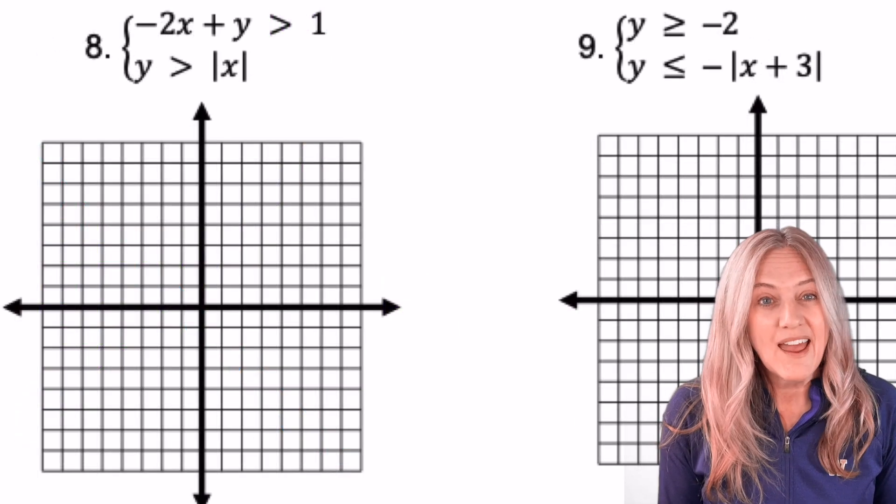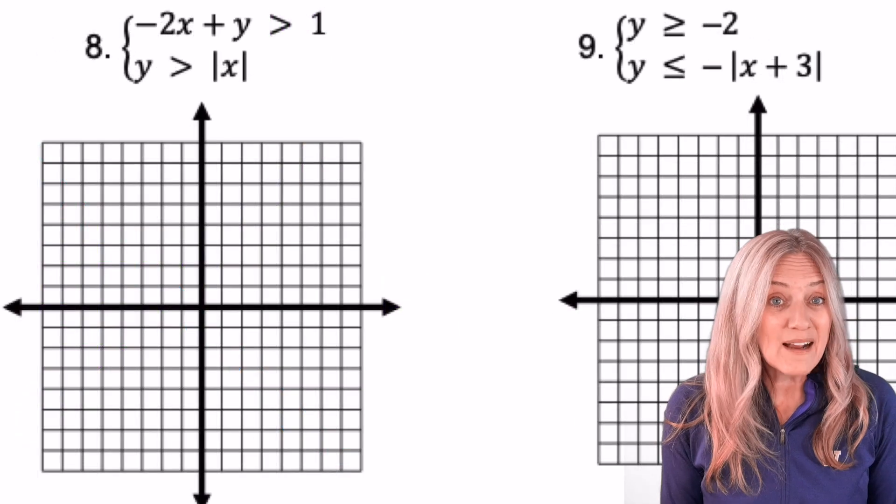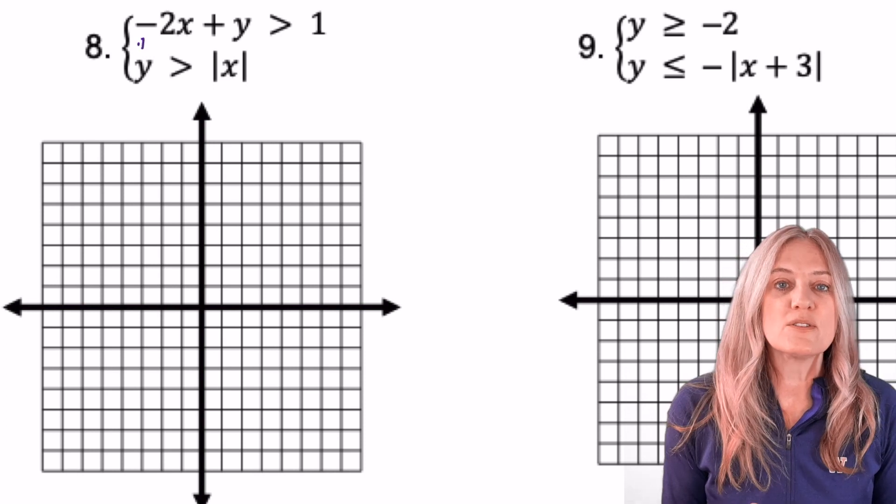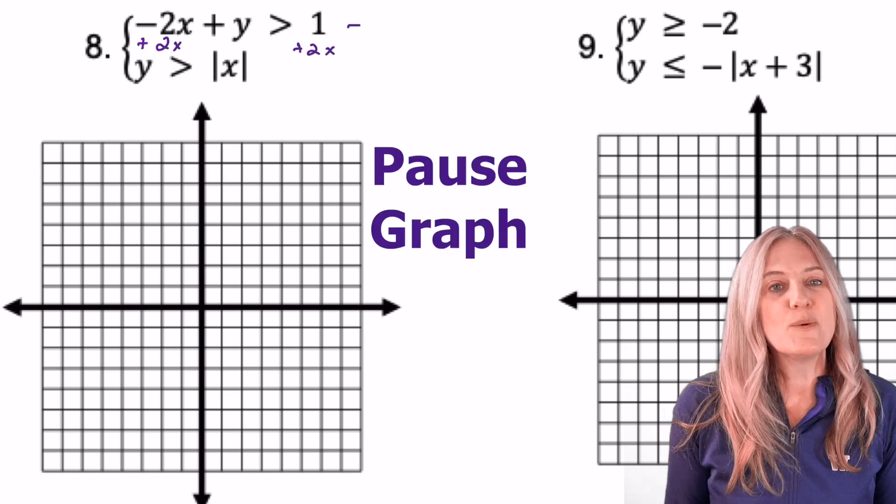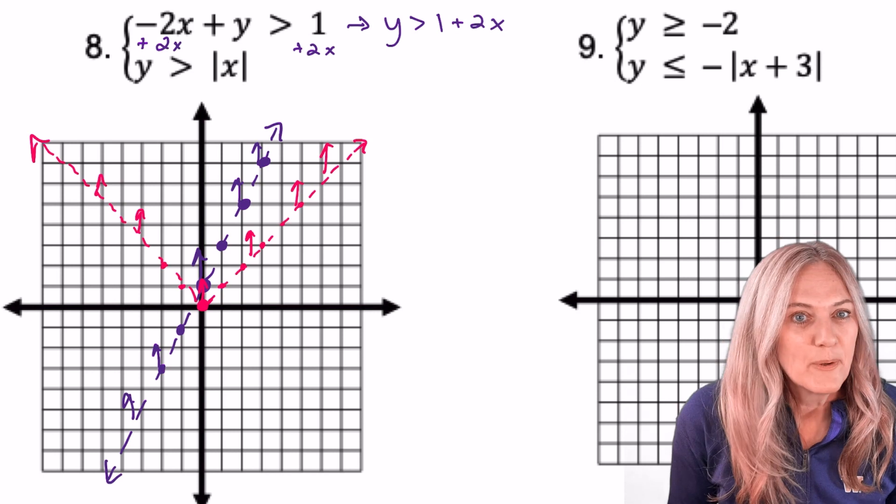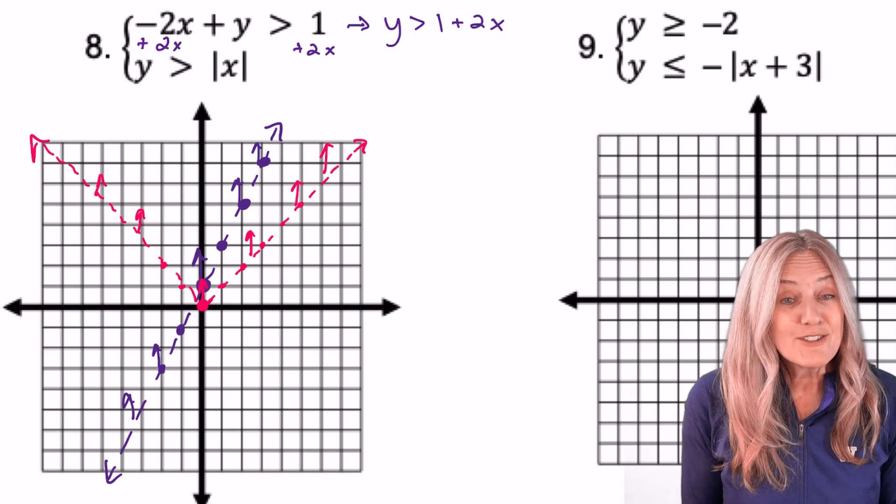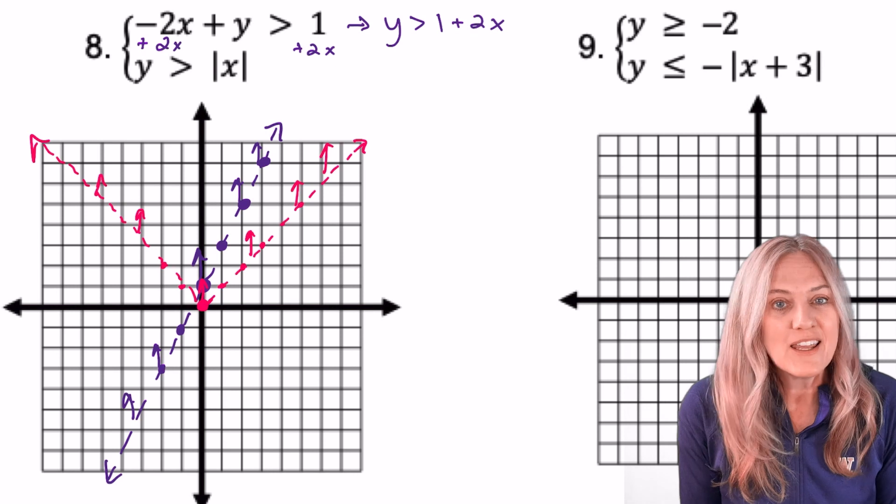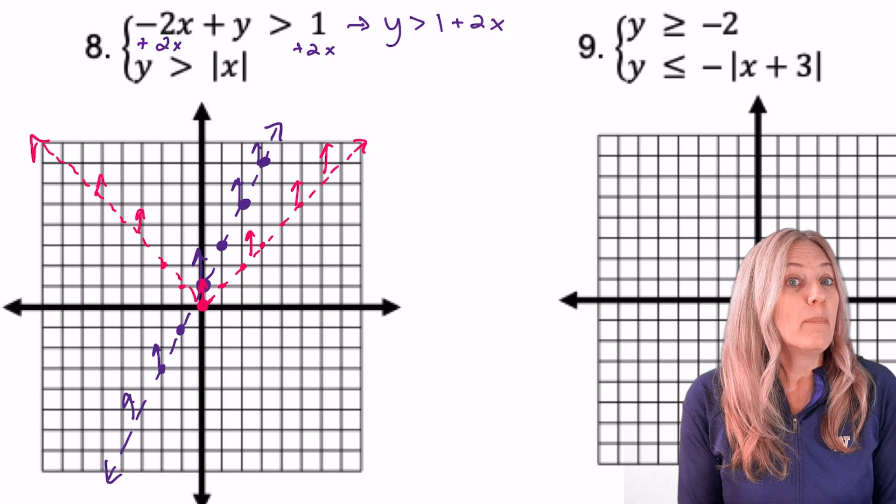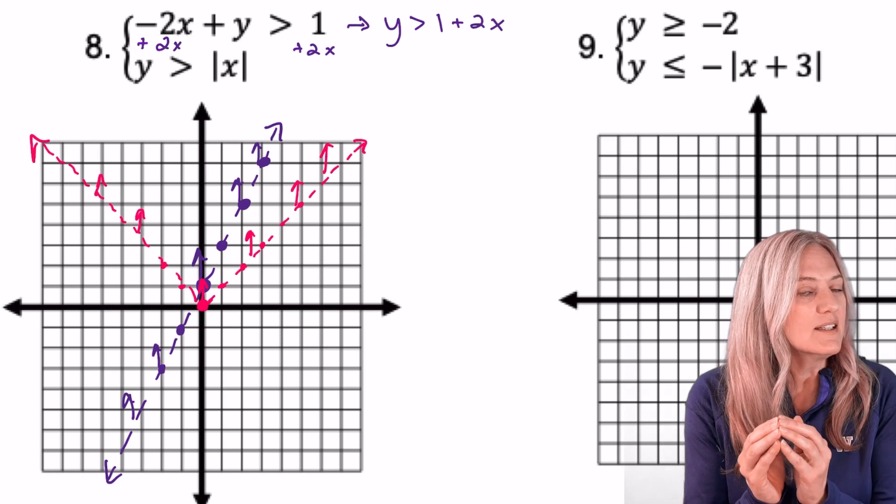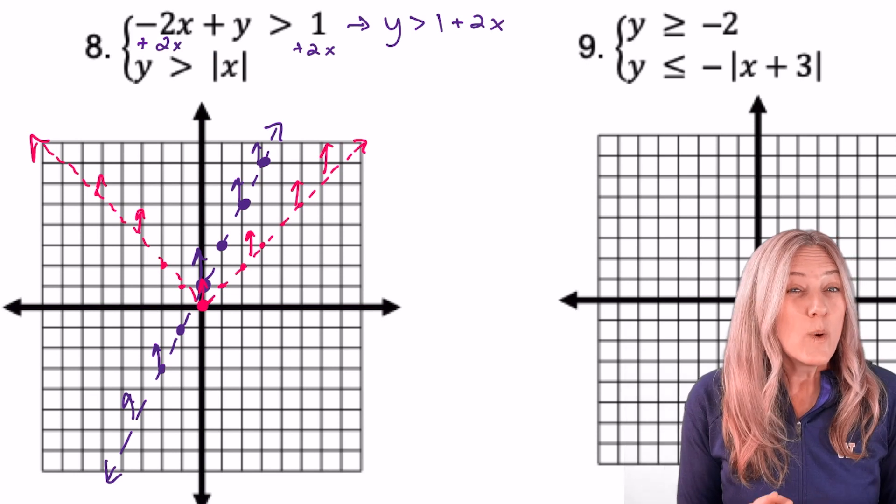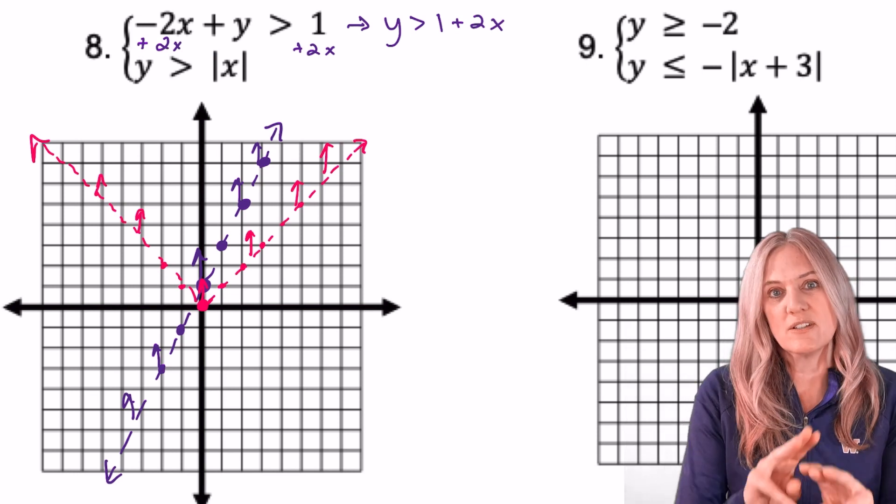The next system has a line and an absolute value. We've practiced quite a bit. Let's see how far you can get. That first one on the line, be sure to solve for y, so add the 2x, move it over, then graph. All right, first pop quiz. Are they both dashed? It's so easy to forget to check that. They aren't equal to, so both graphs have to be dashed. Next, did you shade above the line because it's greater than, and inside the v because that was also greater than. All right, where would the two shaded regions overlap?